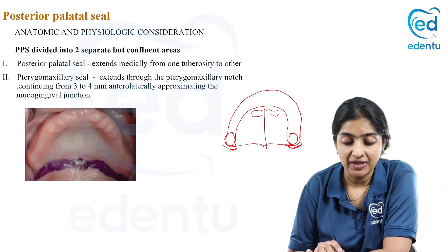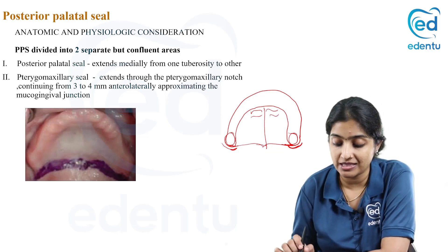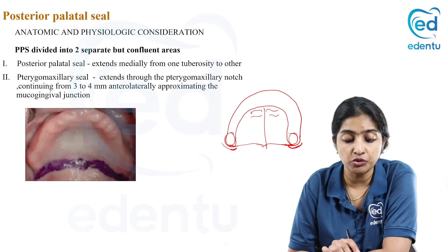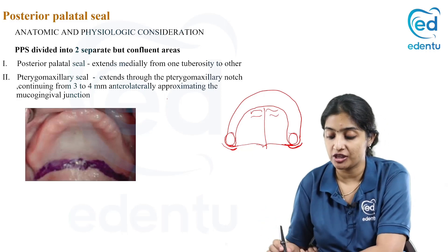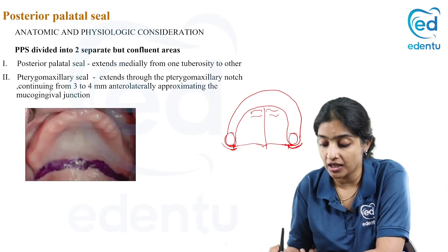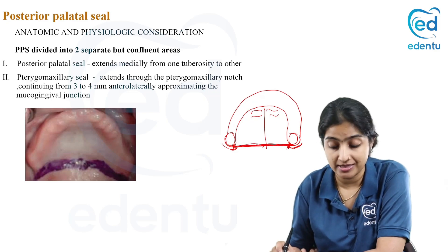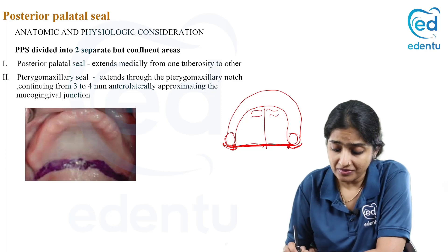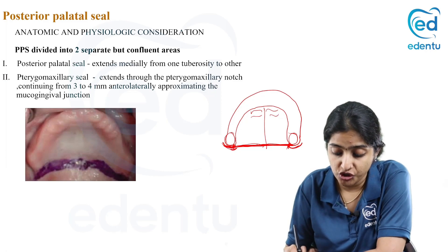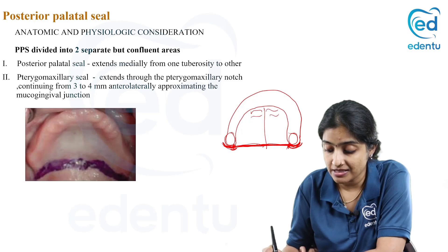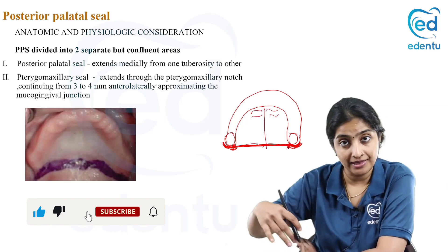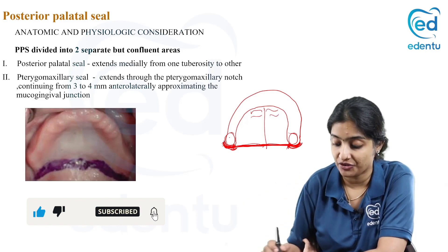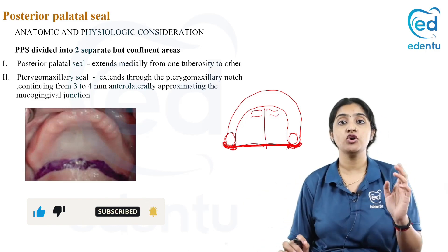What is the pterygo-maxillary seal? It extends through the pterygo-maxillary notch, continuing 2 to 3 to 4 mm anterolaterally, approximating the mucogingival junction. So from one maxillary tuberosity to the other is the posterior palatal seal, whereas what extends in the pterygo-maxillary notch anterolaterally — that is anterior and lateral — is your pterygo-maxillary seal.